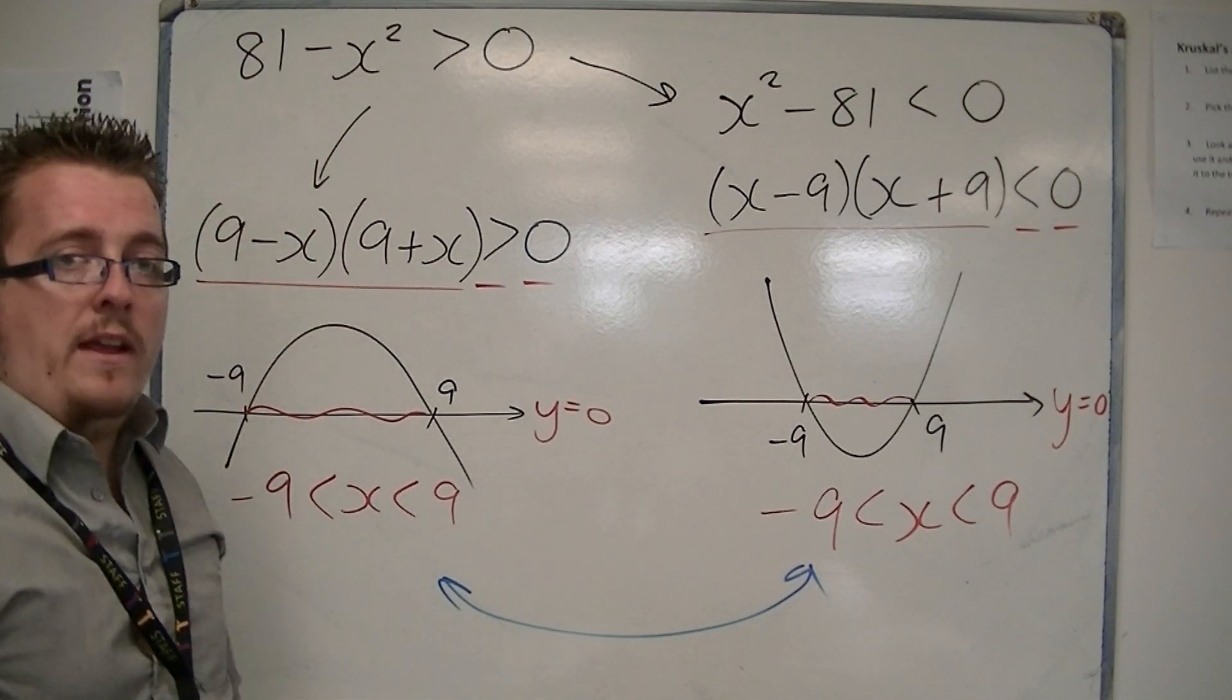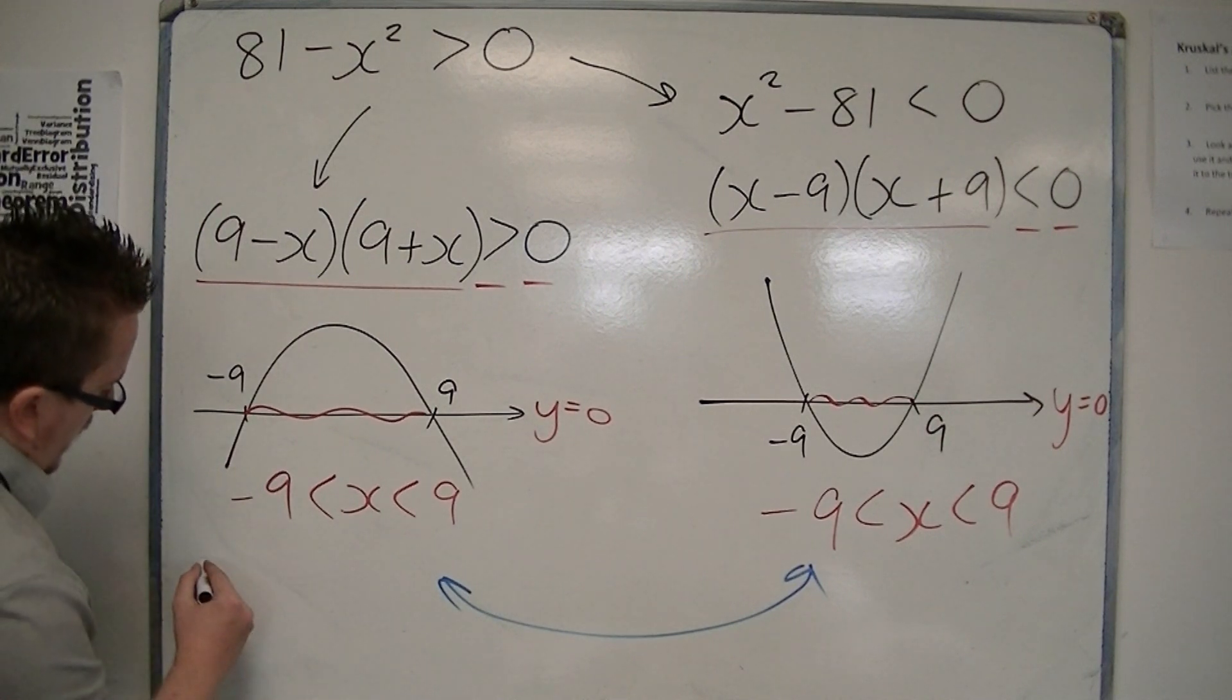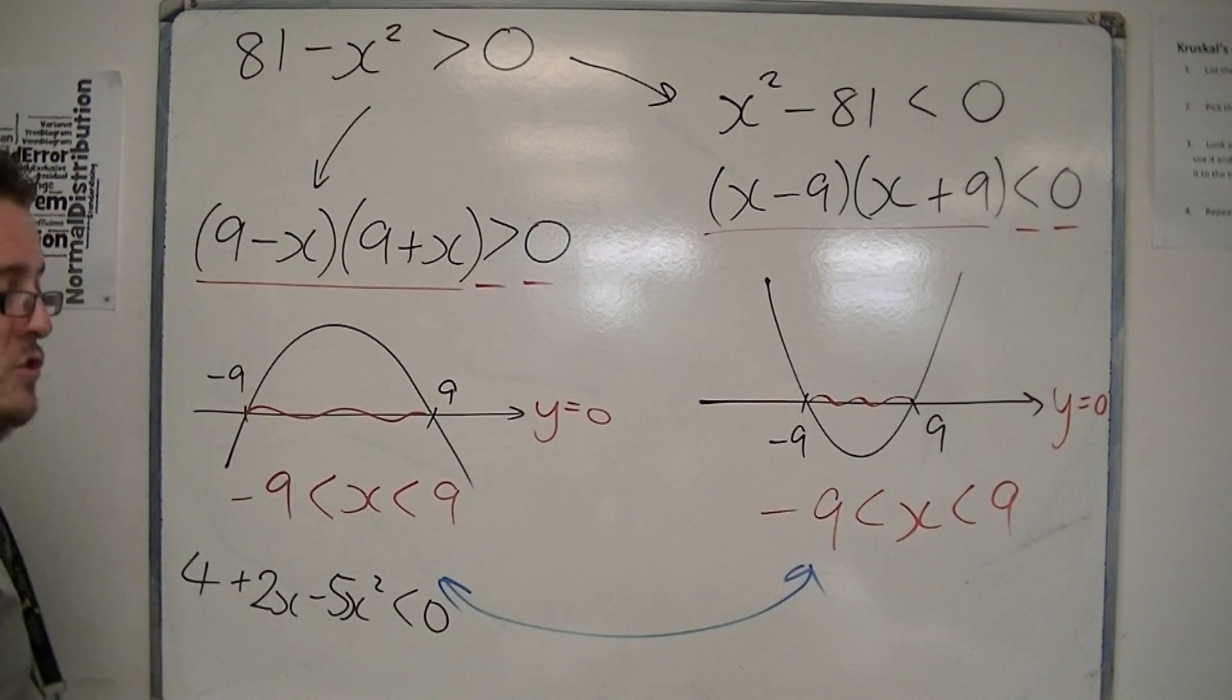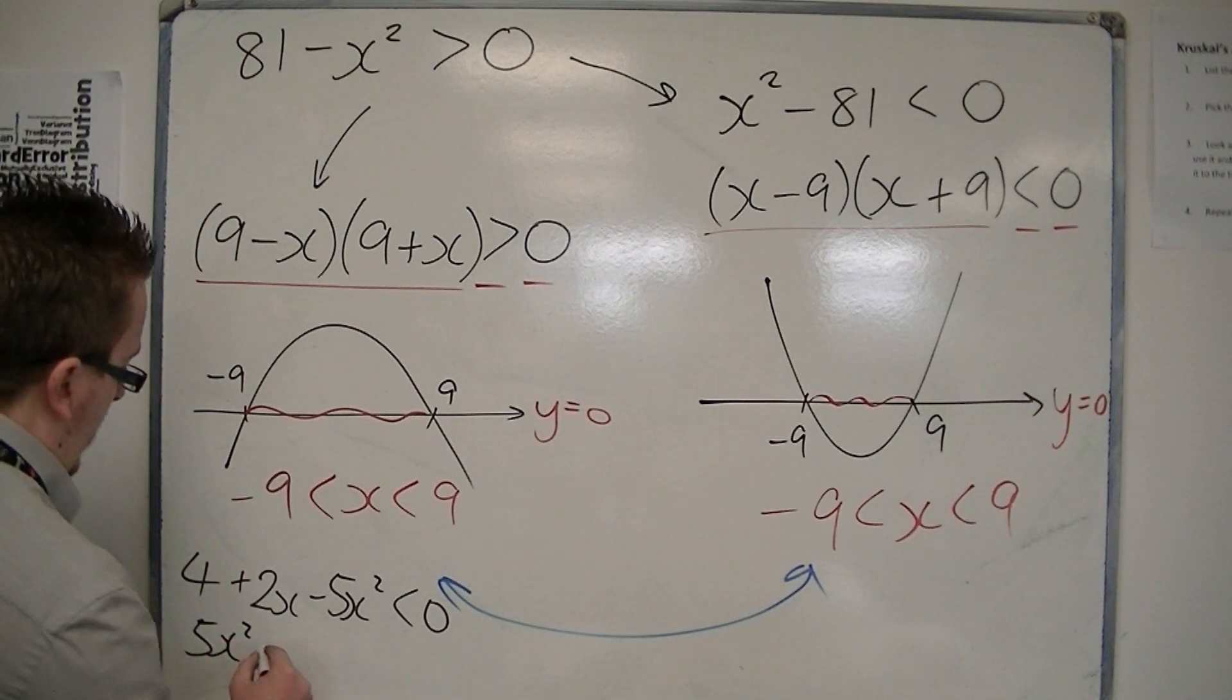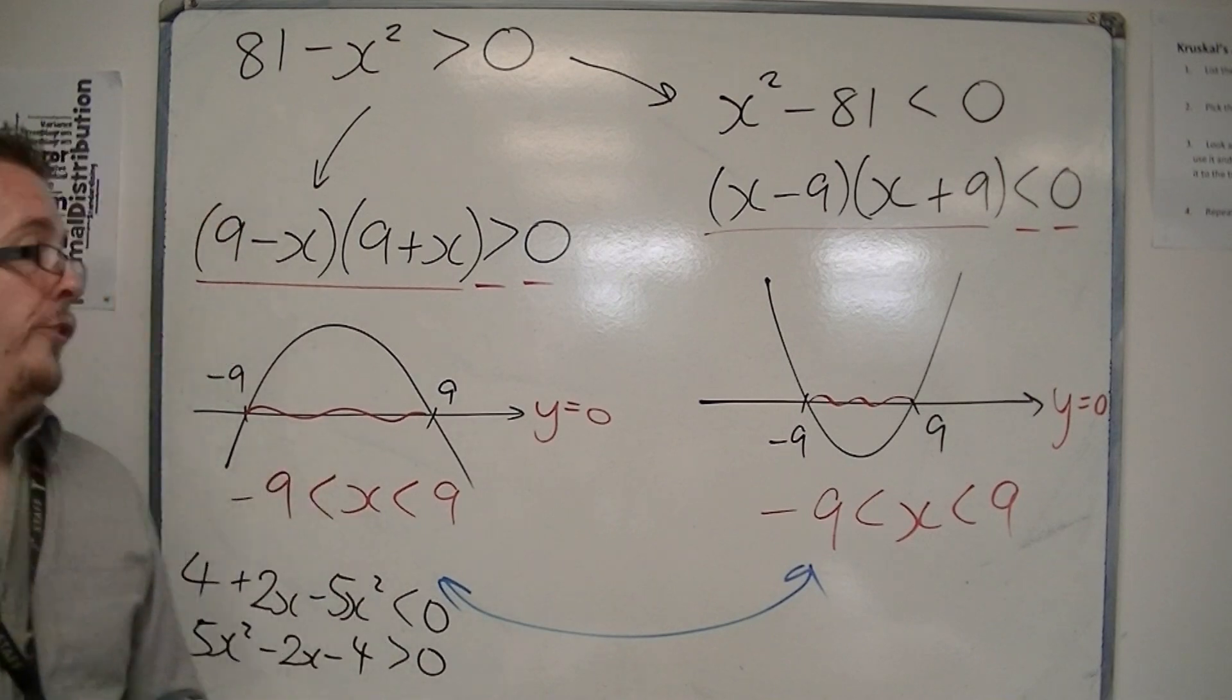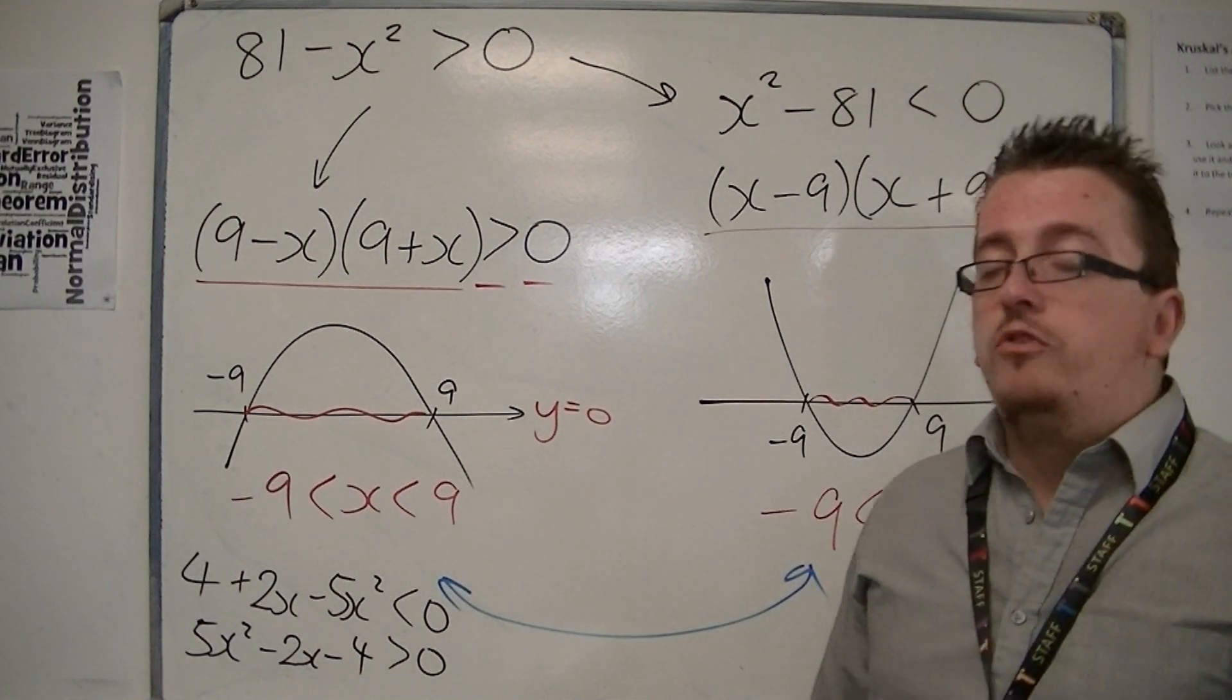If you'd had something like 4 plus 2x minus 5x squared is less than 0, then if you multiply through by minus 1, you can rewrite that as 5x squared minus 2x minus 4 is greater than 0. And solve that inequality instead, using quadratic formula, factorising, whatever. And this will work for any quadratic inequality you meet.